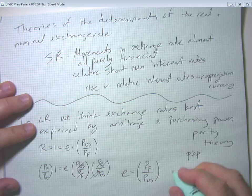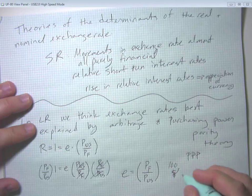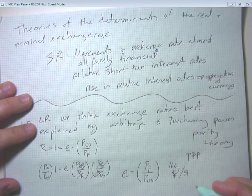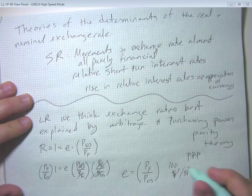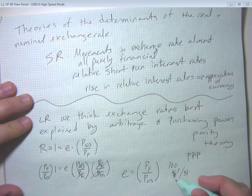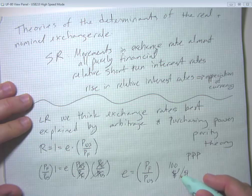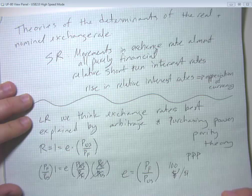So that if the nominal exchange rate is 100 yen per dollar, we think that typically things are going to be about 100 times as expensive in yen as they are in dollars. Or if it's 10 pesos per the dollar, then a hamburger that costs $3 in the US will probably cost about 30 pesos in Mexico.